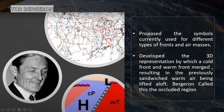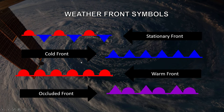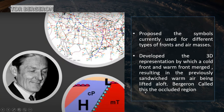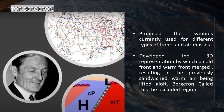Thor Bergeron is the person responsible for all the front symbols and other weather symbols. He developed these after the Norwegian cyclone model was established. He proposed the symbols currently used for different types of fronts and air masses, and also developed a 3D representation by which a cold front and warm front emerge, resulting in the previously sandwiched warm air being lifted aloft. Bergeron called this the occluded region.